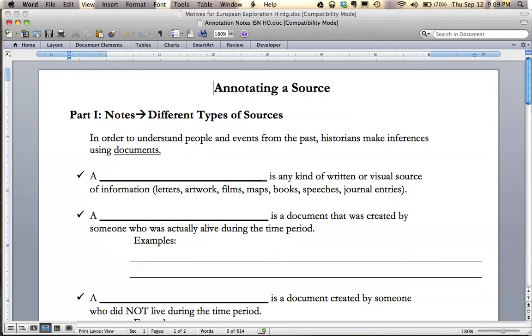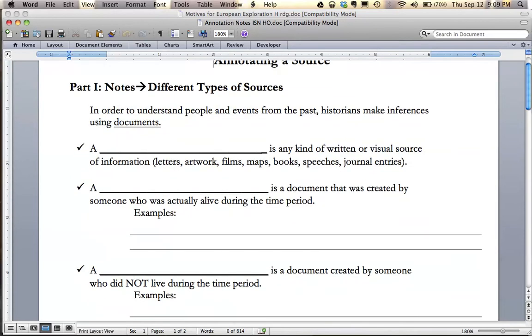So first I'm going to start on the annotating a source document. There are some brief notes here that we do need to go over. So let's talk about different types of sources. In order to understand people and events from the past, historians make inferences using documents.